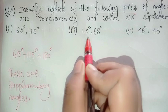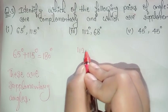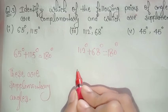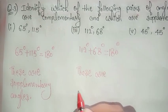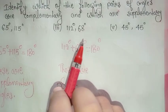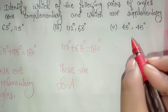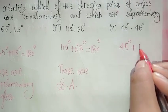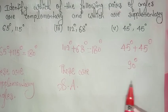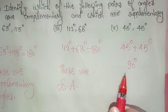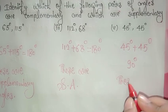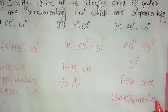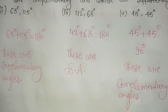The third part is 112 degrees and 68 degrees. Their sum is 112 plus 68, which equals 180 degrees, so this is also supplementary. Try to solve the fourth part by yourself. Now the fifth pair: 45 degrees and 45 degrees — 45 plus 45 equals 90 degrees, and since the sum is 90 degrees, these are complementary angles. So our third question is done.